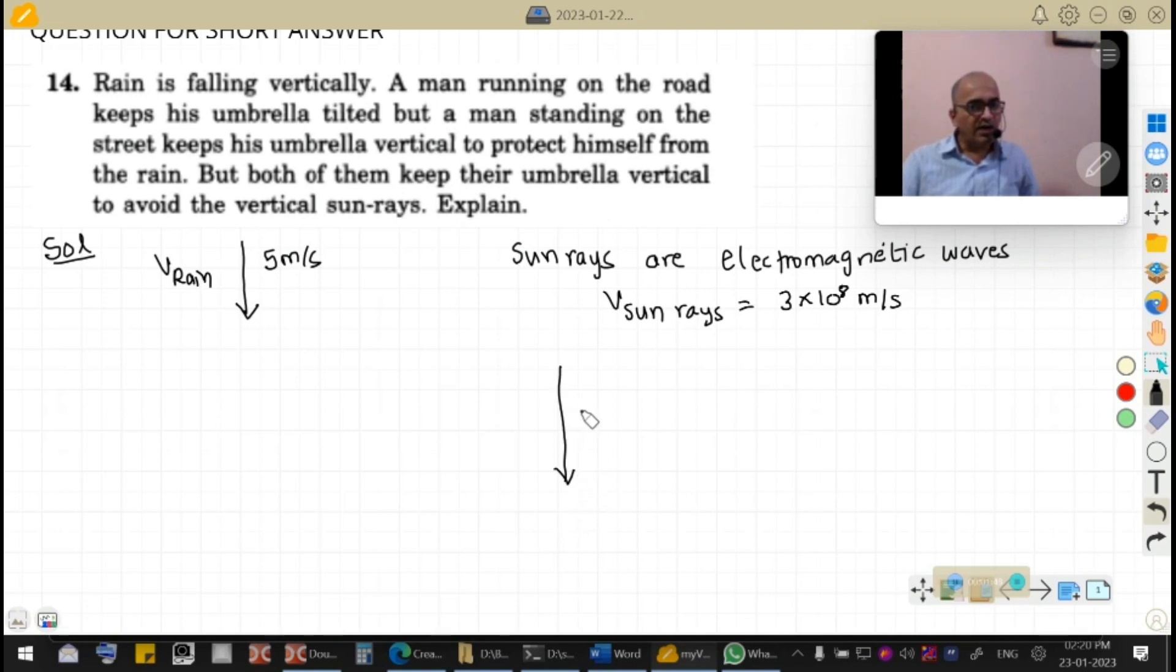Now it is coming at a speed of 3 × 10^8 meters per second. Suppose the man is moving like this. The maximum speed a person can run is about 10 meters per second.